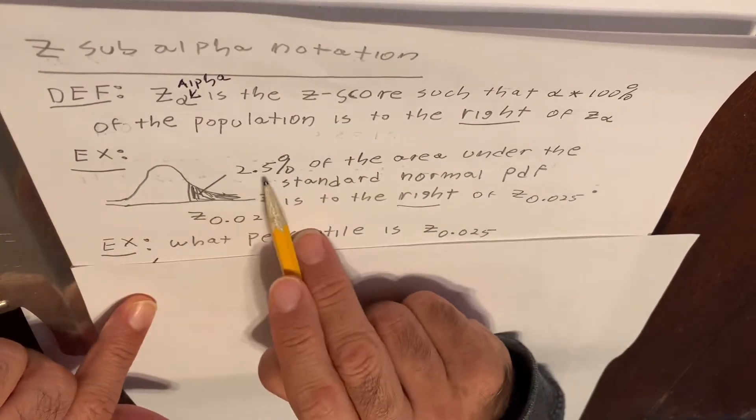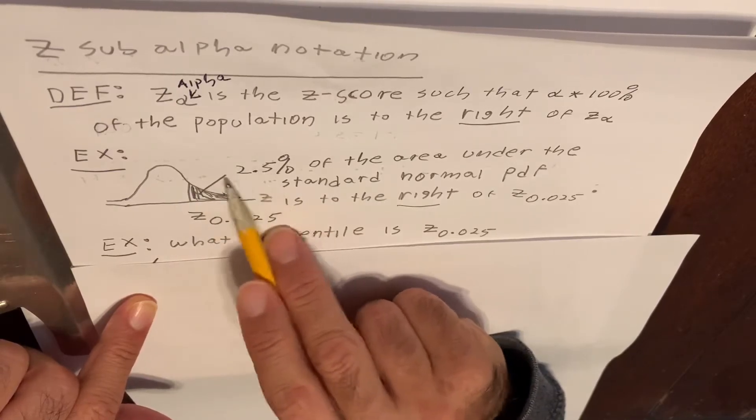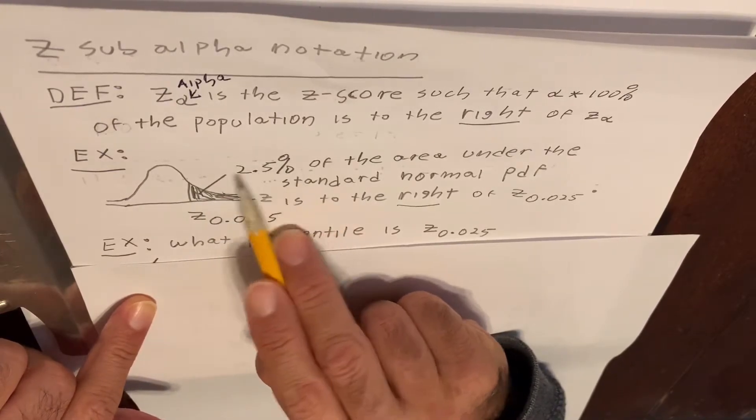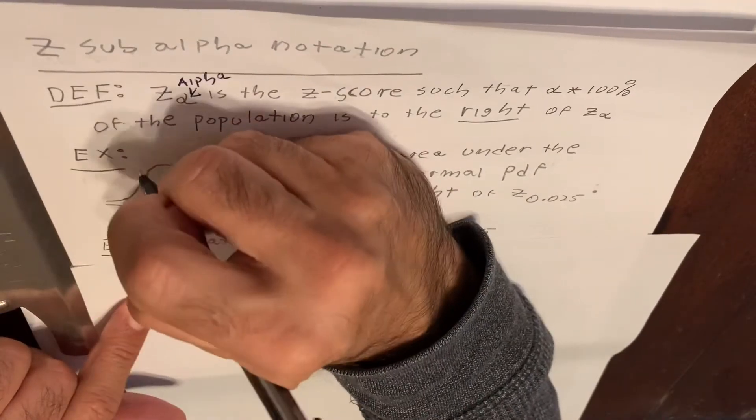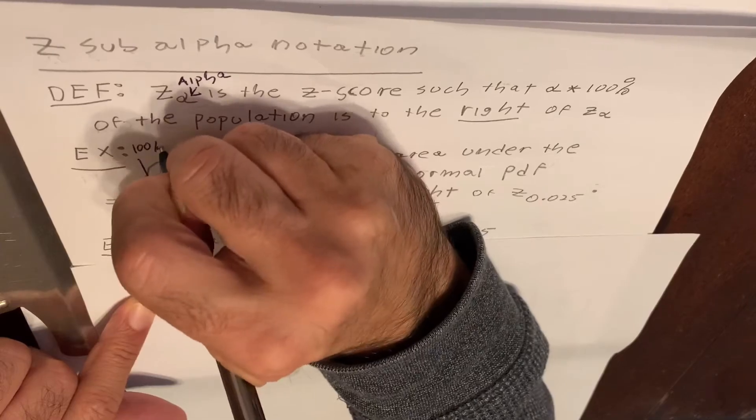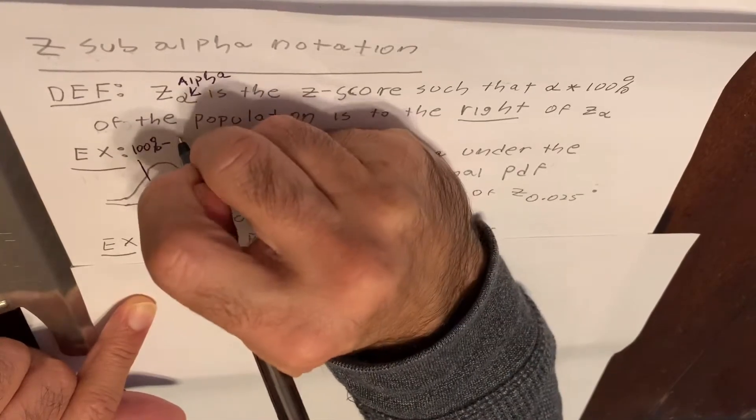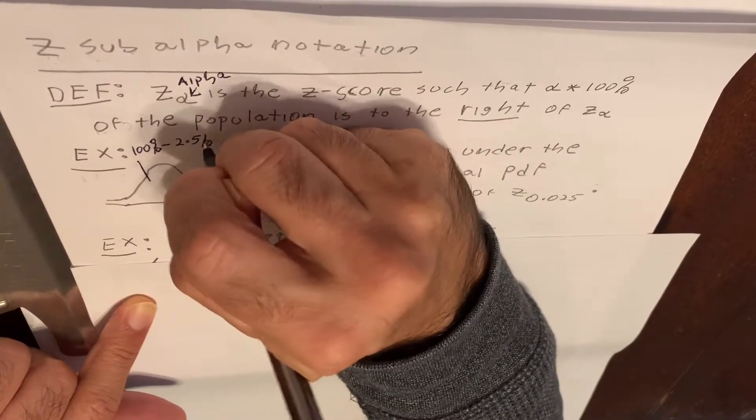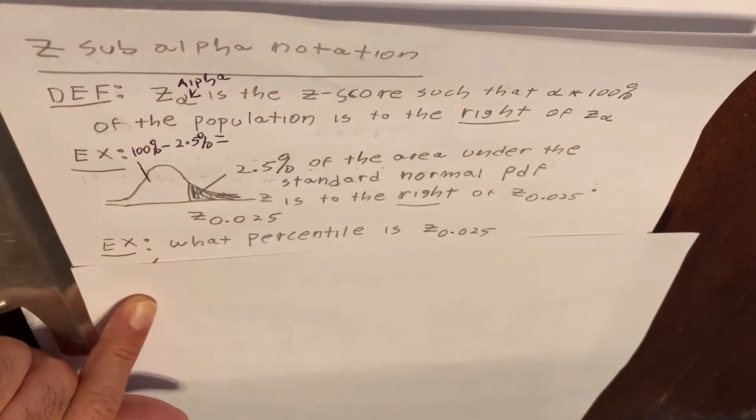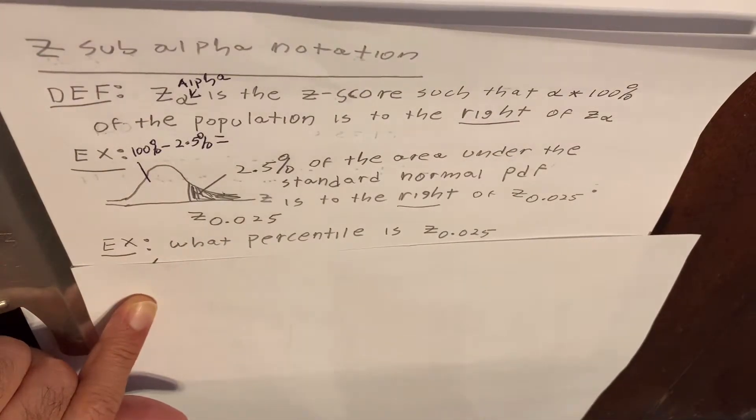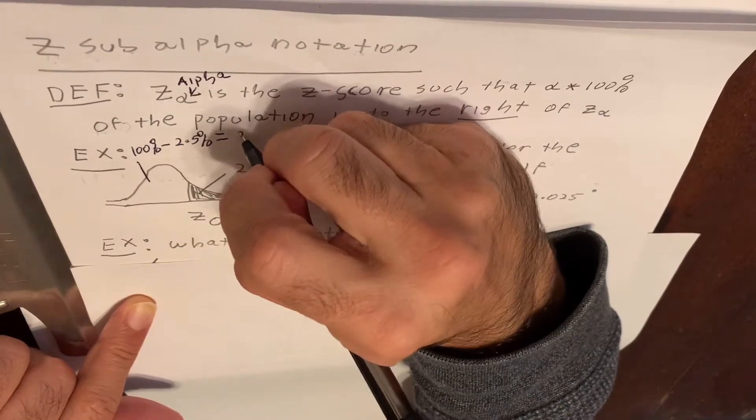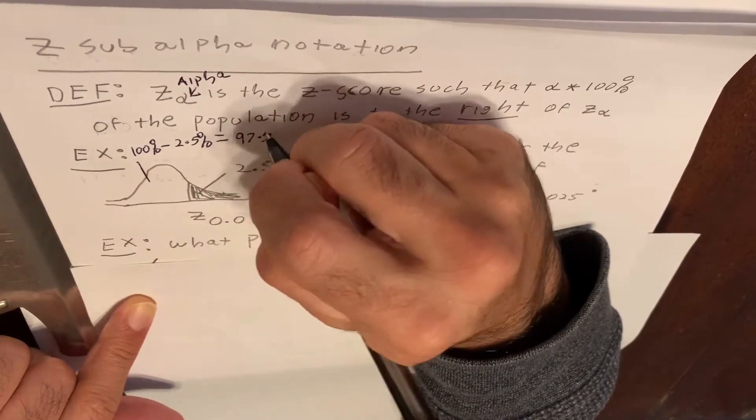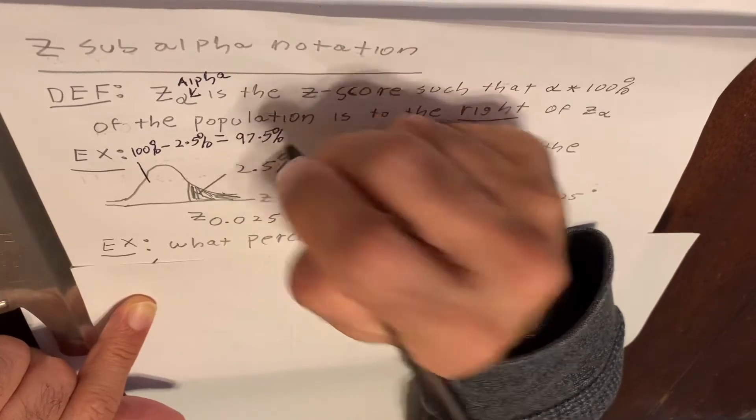then there has to be 100% minus 2.5% area to the left. And if you do 100 minus 2.5, you get 97.5%.